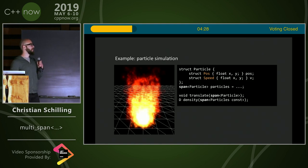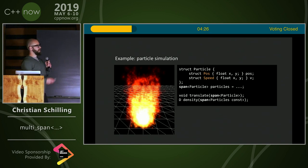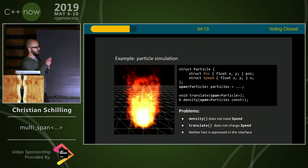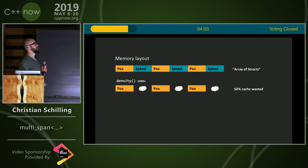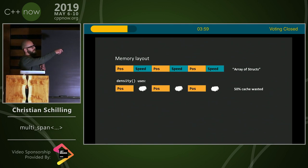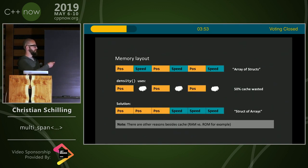An example: let's say we want to build a particle system. We have two components per particle — position and speed — and two operations: translate and compute density. The problem is density does not need speed, and the translation does not change it, and neither of those facts is expressed in the function signatures. Also, the memory layout is interleaved, so density, which doesn't use speed, wastes 50% of the cache. The obvious solution is to change the layout and put them separate — there might also be other reasons, for example, you might want to put one in ROM instead of RAM.